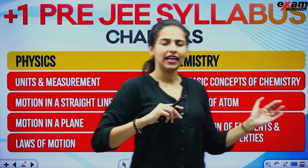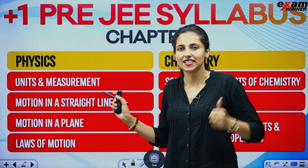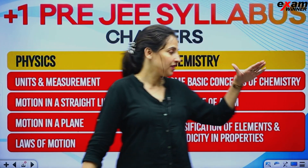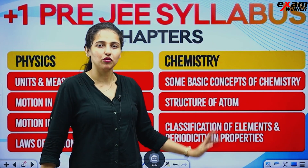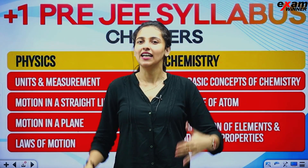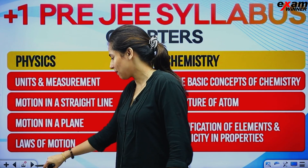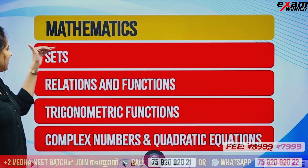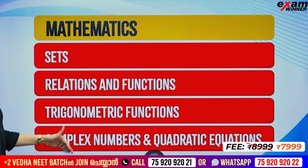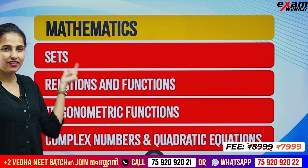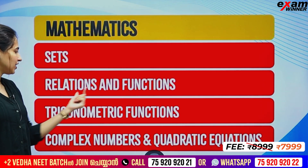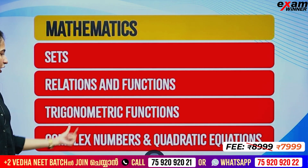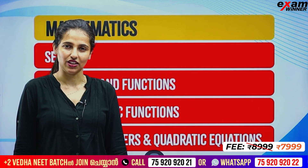We are going to explain all of the Plus 1 syllabus for JEE — Physics and Chemistry chapters. And in JEE, instead of biology, what is there is Maths. In Maths, you have four chapters: Sets, Relations and Functions, Trigonometric Functions, and Complex Numbers and Quadratic Equations.